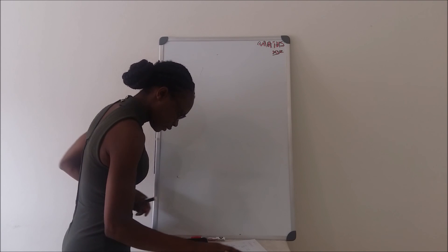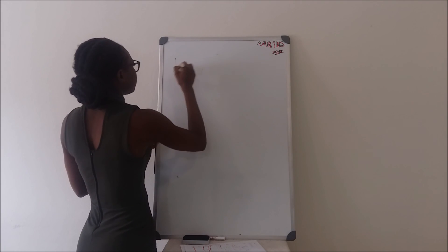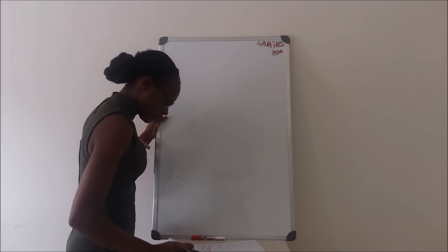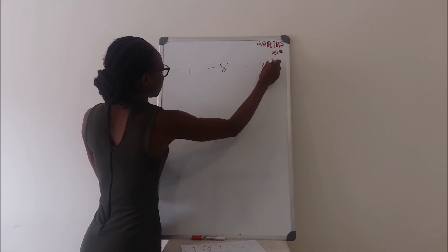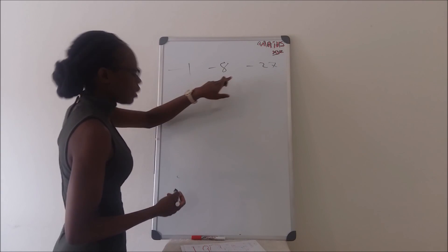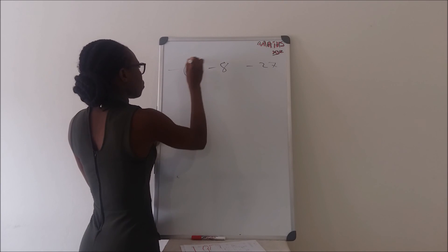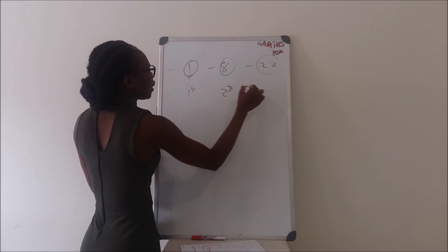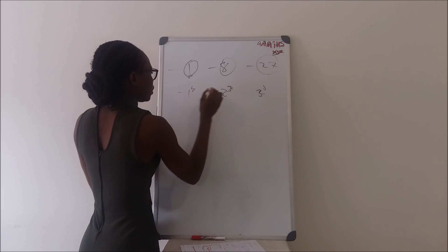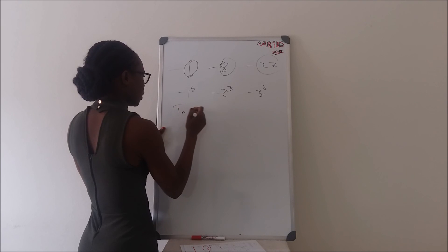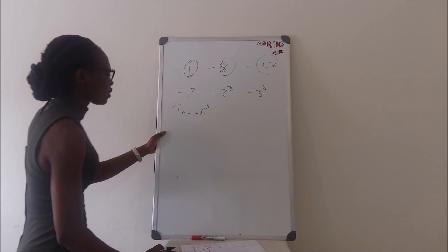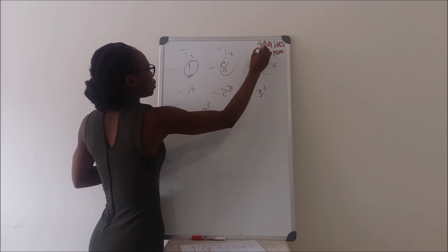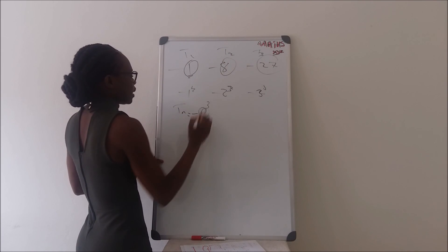Last question for the session. The pattern is negative 1, negative 8, negative 27. We can see that 1 is 1 cubed, 8 is 2 cubed, and 27 is 3 cubed — but we have a negative there. So Tn for this question would be negative n cubed. Using this equation, it gives you those patterns. You just substitute n by any term and it will give you that expression.